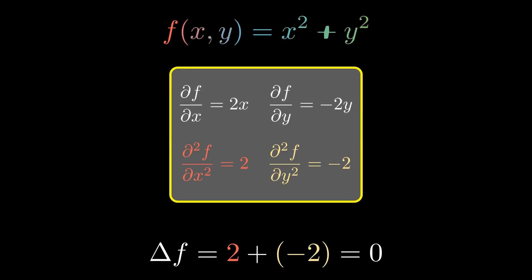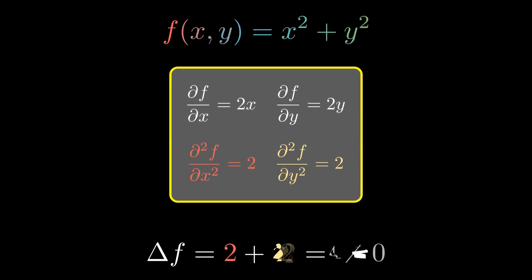All of them except one. The function x squared plus y squared. Its Laplacian is not zero. And that is why the trick stops working.